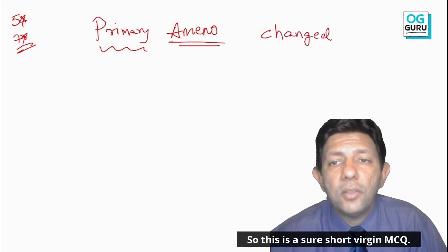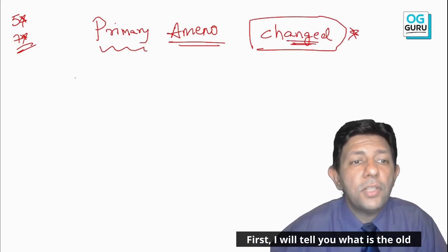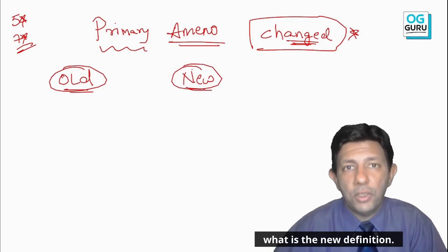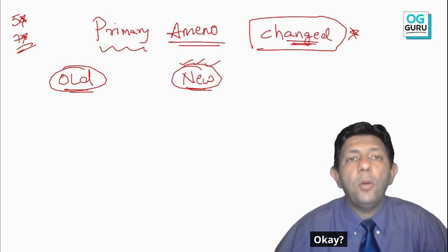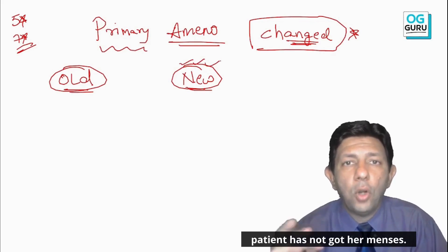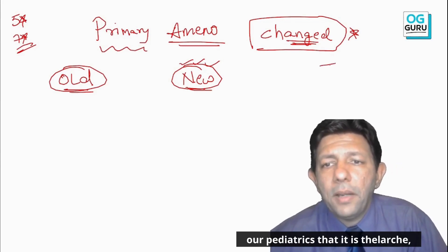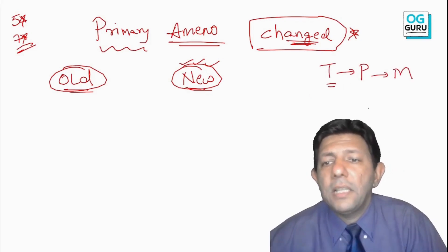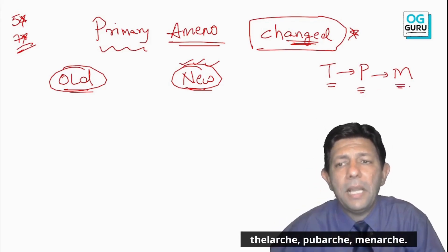This is a sure-shot virgin MCQ — the definition of primary amenorrhea has changed. I will first tell you the old definition so you understand the new one. The new definition is what you will remember in the exam. From the basics of pediatrics, we know the sequence: thelarche, pubarche, menarche — first breast development, then axillary and pubic hair, then menses.